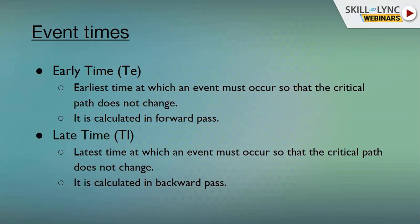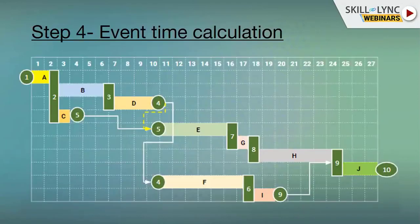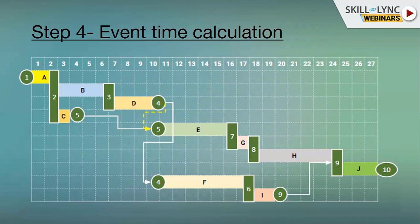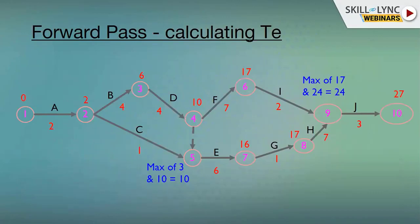In the backward pass, we calculate time by moving from the last event to the first event, subtracting the duration of the activities. To summarize, I have made a graphical representation of event times: event one is happening on day zero, event two is happening on day two. Forward pass is simple — event one is having zero time; TE for event one is zero as it marks the onset of the project. Moving to event two, zero plus two will result in two.